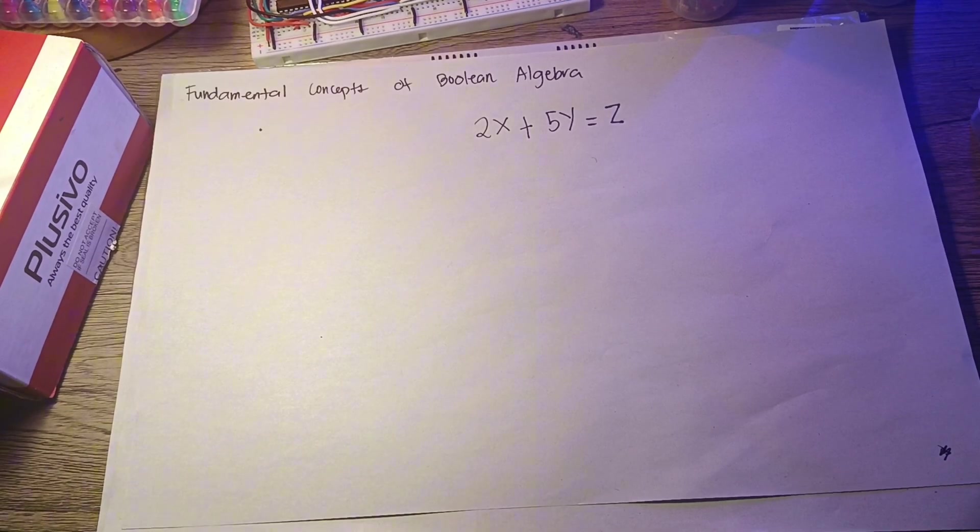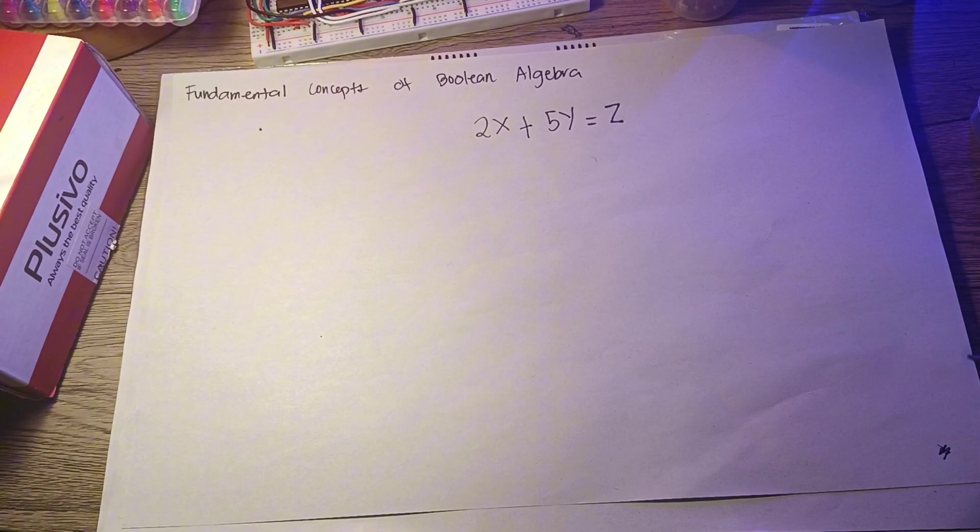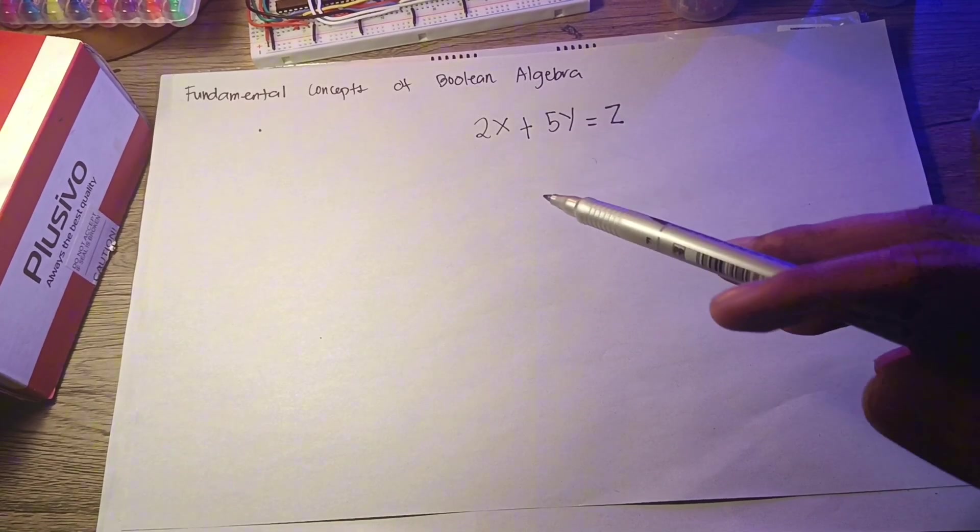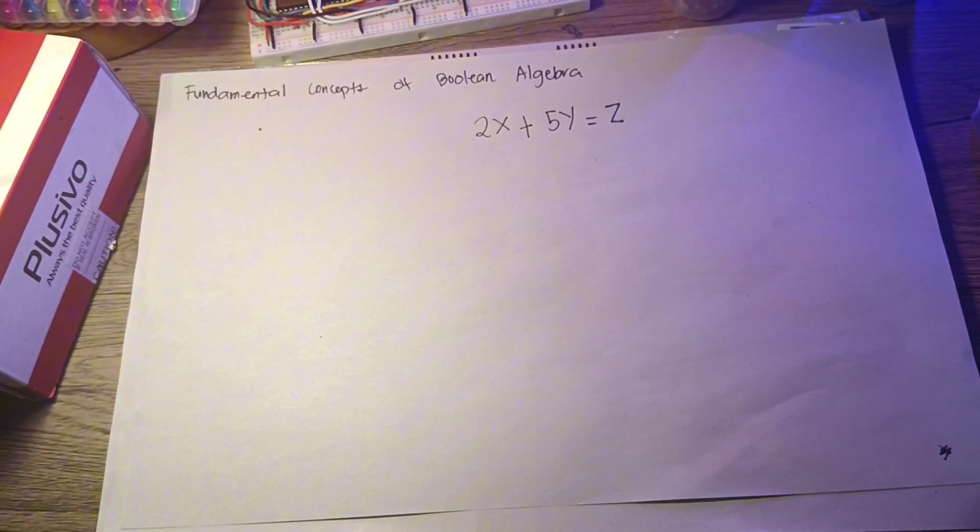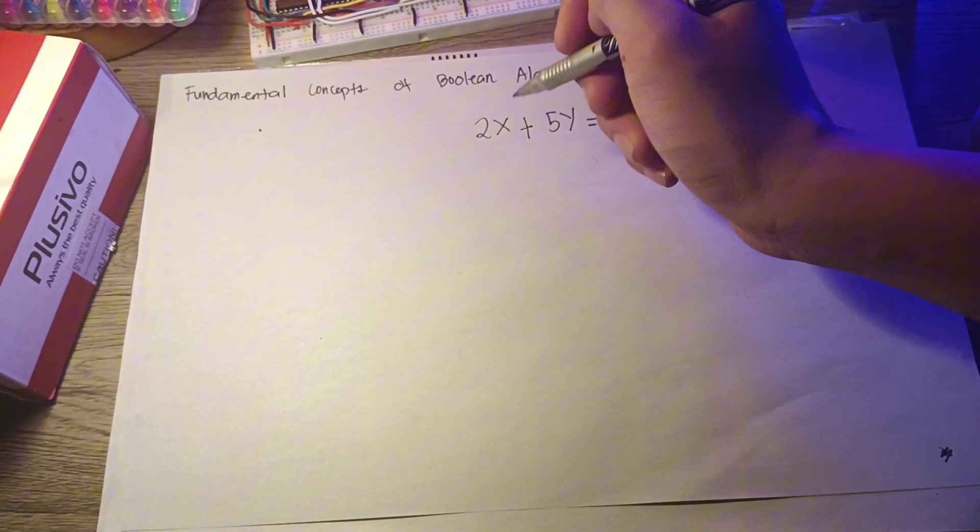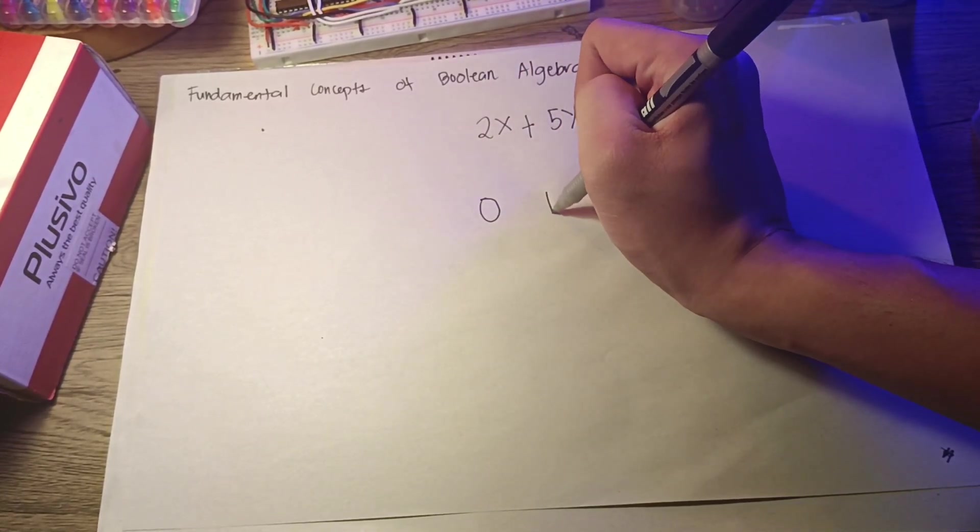But the variable used in Boolean equation have a unique characteristic. They may assume only one of two possible values in Boolean Algebra. These two values may be represented by the symbols 0 and 1.